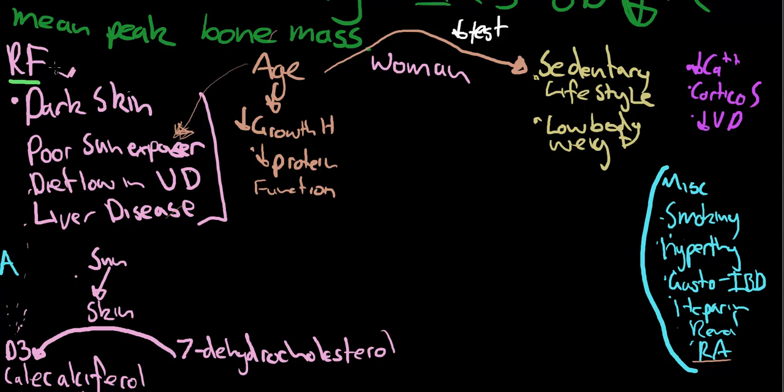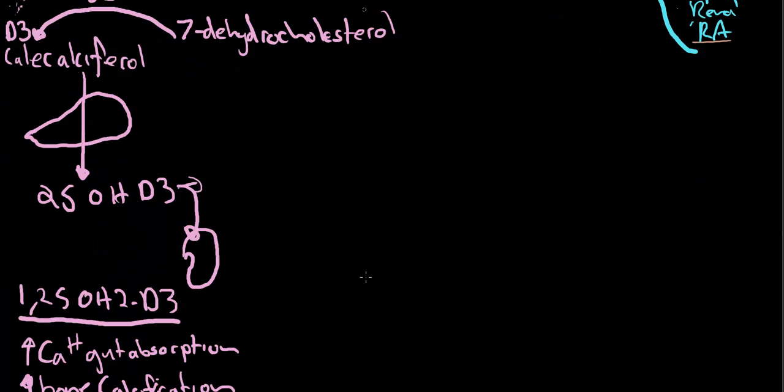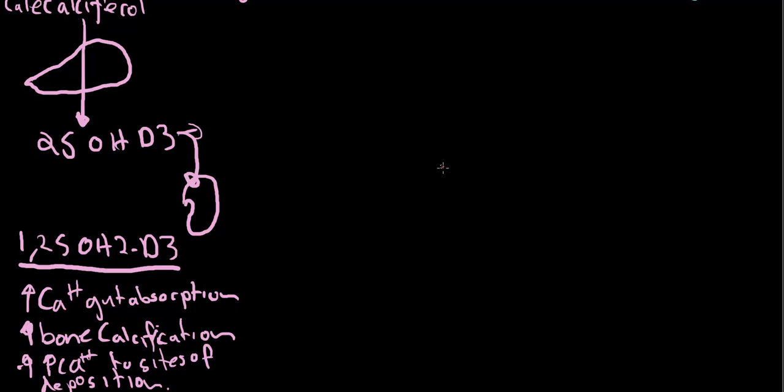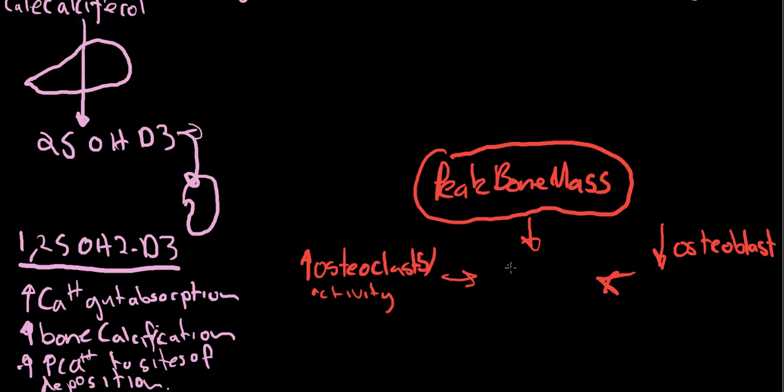Now women is in two ways. Firstly, women have lower peak bone mass in the first place than men. So I'm gonna write in big red: peak bone mass. And here, increase osteoclasts, their activity, and decrease osteoblasts equals osteoporosis.